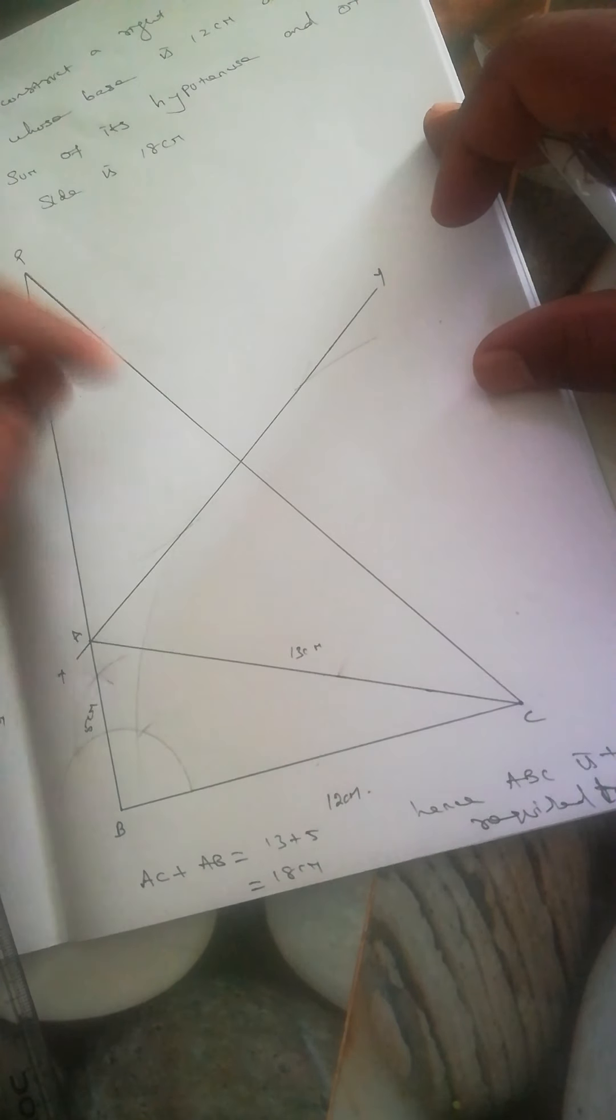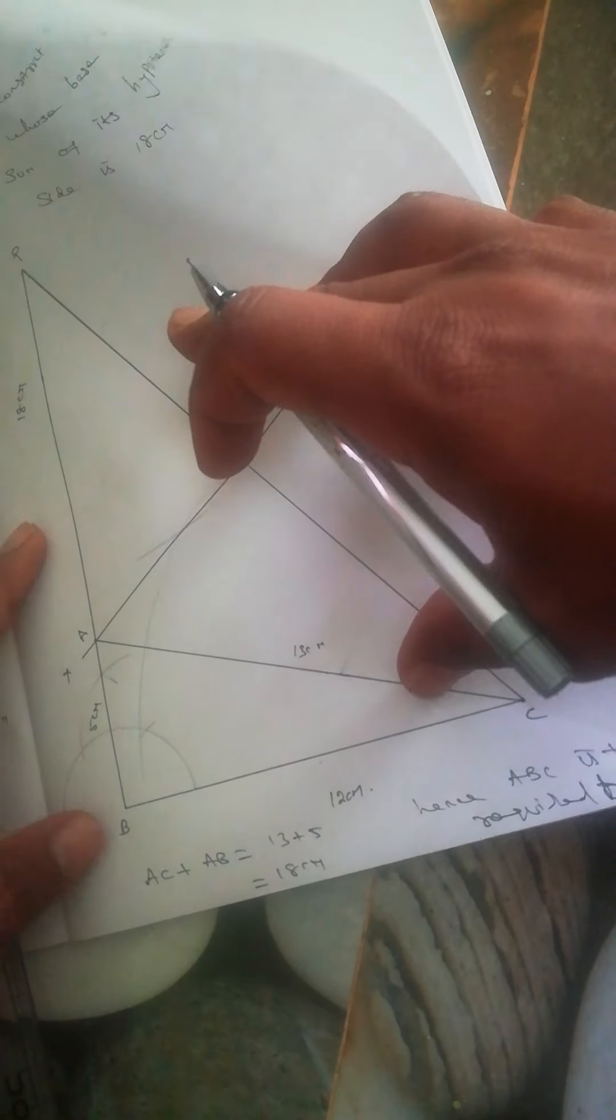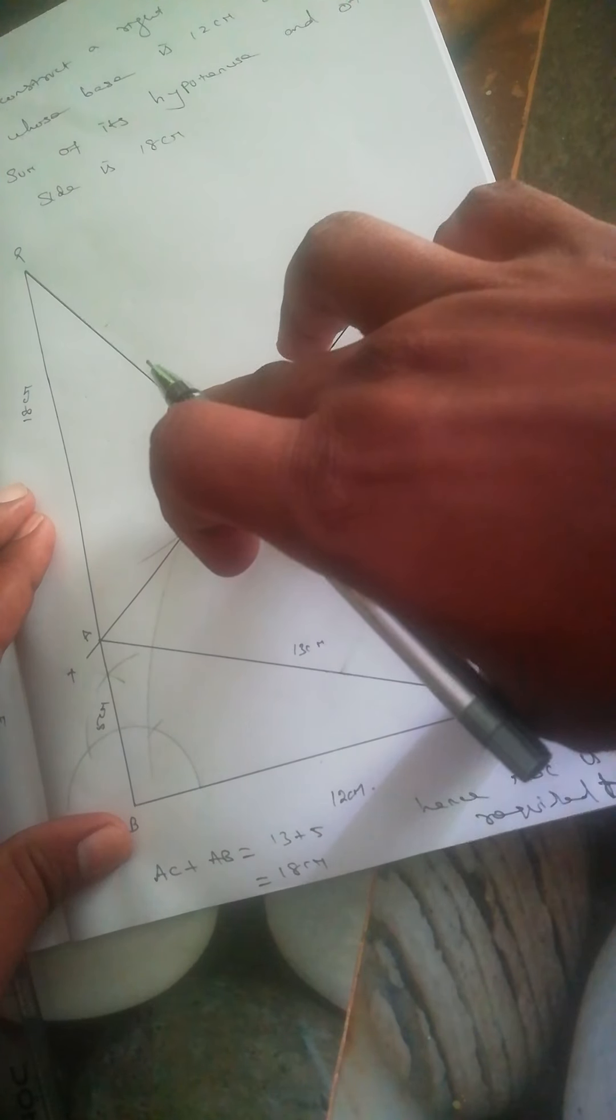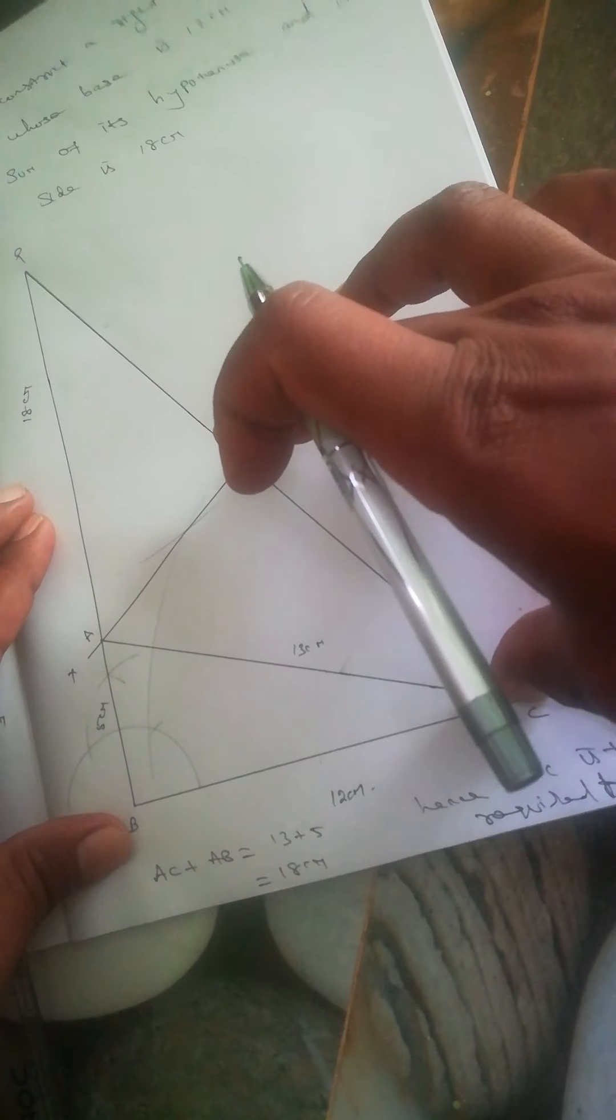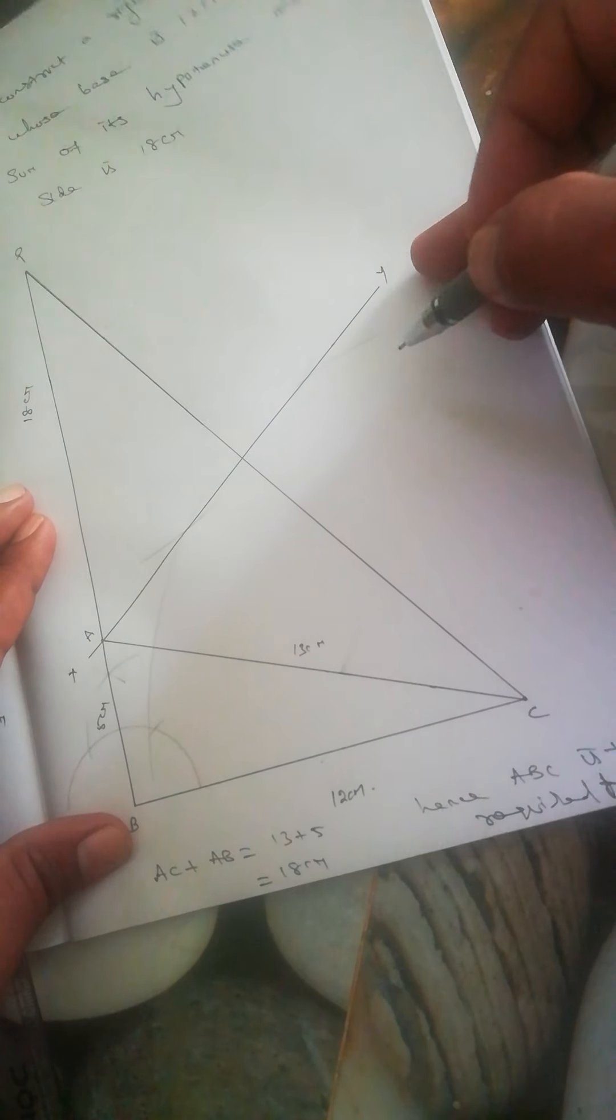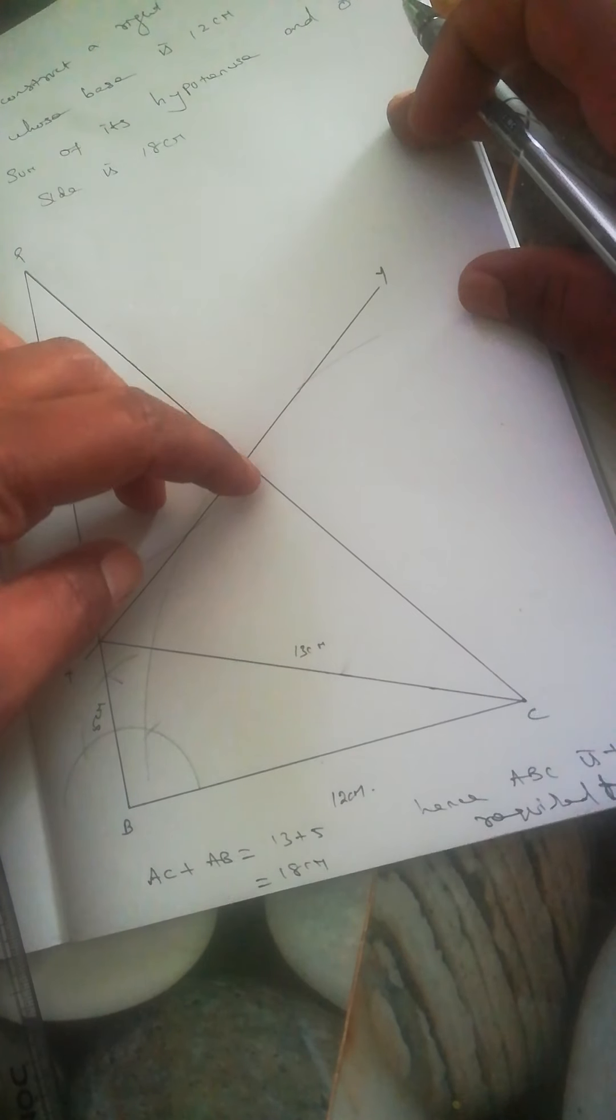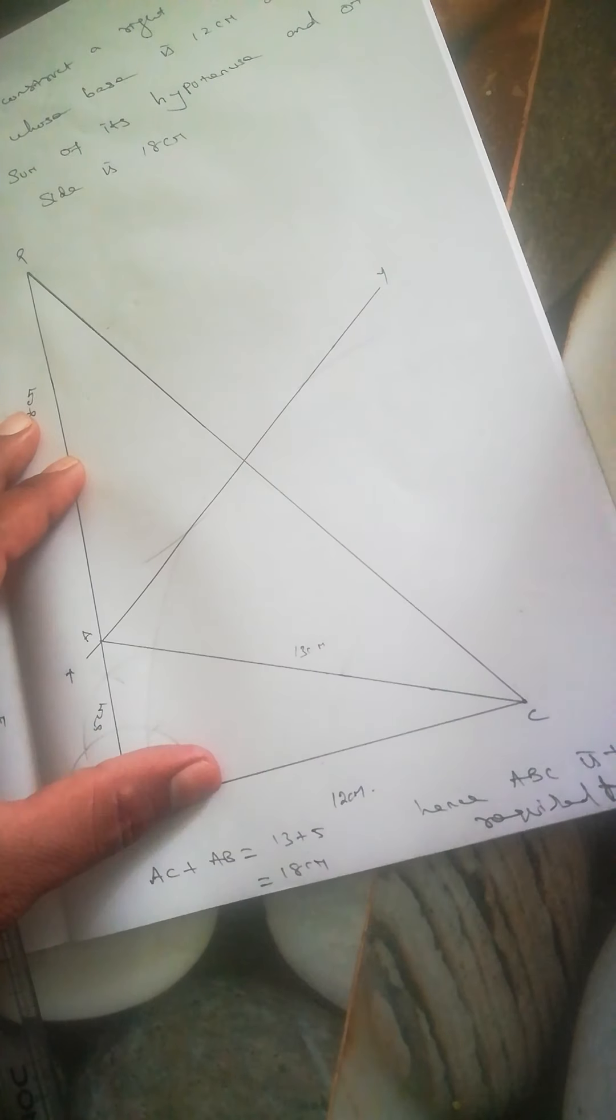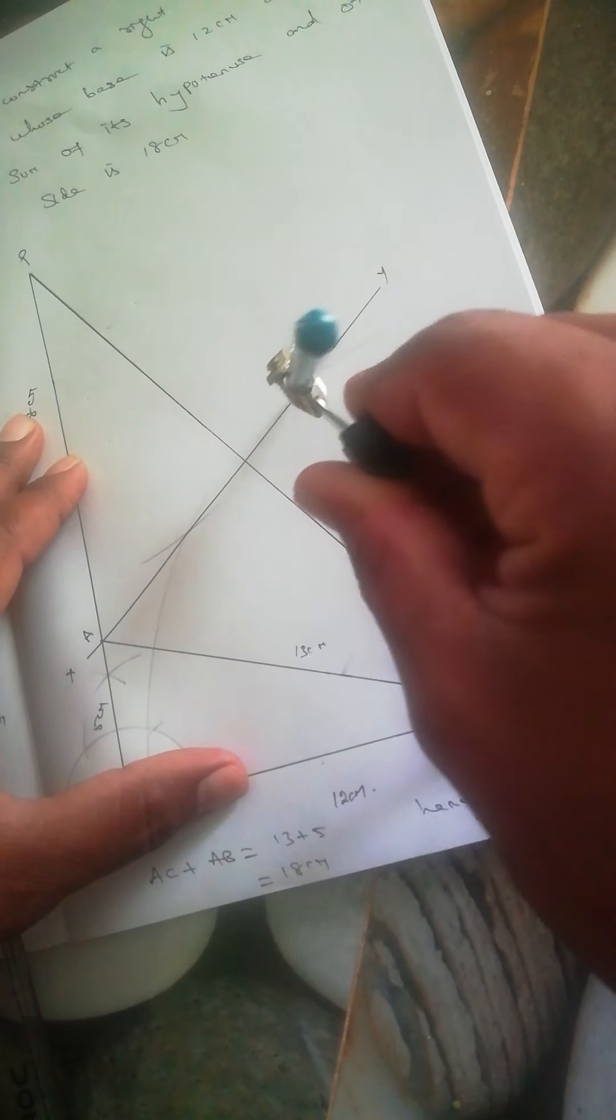Draw the perpendicular bisector by taking more than half the length with your compass—it's a longer line, so take a bit longer. If that's not possible, take at least the middle. Cut arcs from C here and here, then from P with the same width, cutting twice.